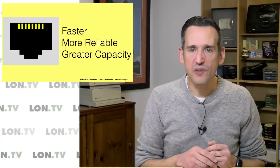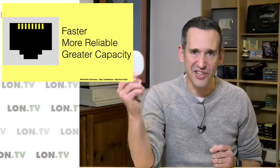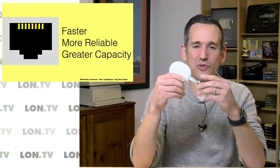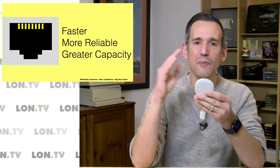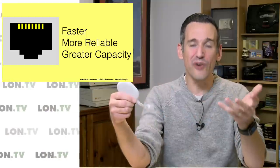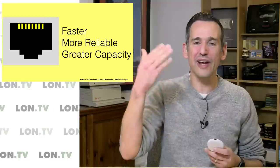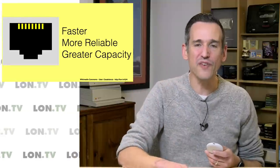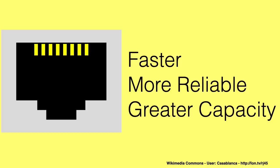Most routers support gigabit ethernet on their ports, but not all client devices do. For example, the new Google Chromecast has an ethernet adapter available, but that adapter only runs at 100 megabits per second — not a full gigabit. As a result, you'll very quickly saturate that device if you try to play one of those high-bandwidth movies off your Plex server. So do your homework on what your client devices support; you might need to upgrade to something with a gigabit ethernet jack on board.